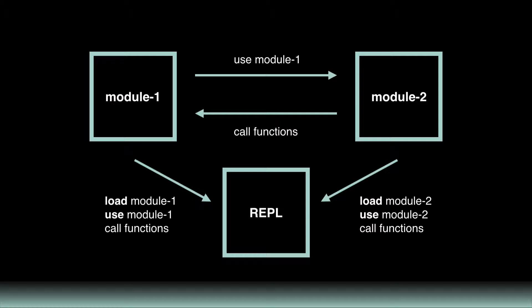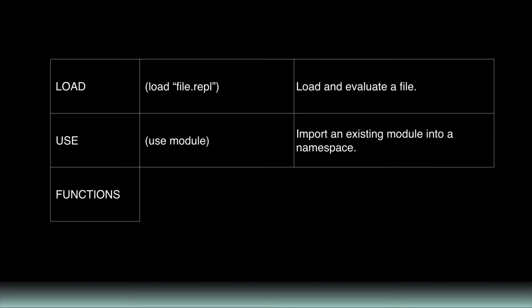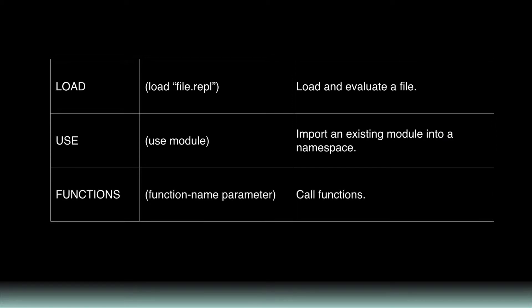To put this into practice, you'll make use of a few important built-in functions. The most helpful Pact built-in functions to keep in mind for contract interaction are load, use, and normal function calls. Load is used to load and evaluate a file. Use allows you to import an existing module into a namespace. Once the interaction is set up between files, all function calls can be done the same as if the function existed within that file.